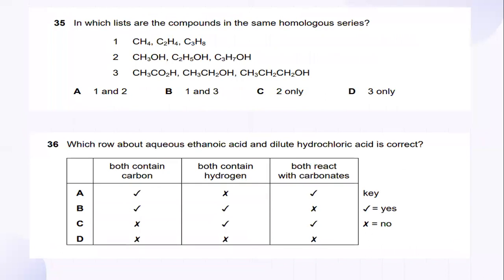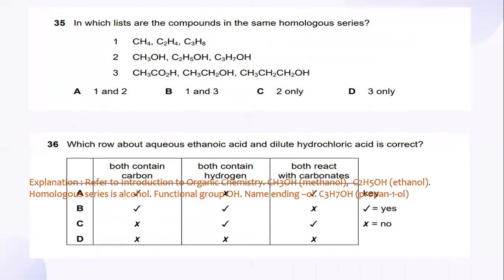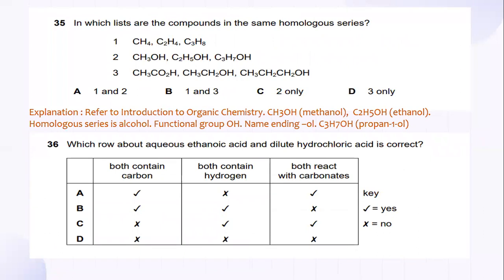And in which list are the compounds in the same homologous series? And refer to introduction to organic chemistry. CH3OH methanol, C2H5OH ethanol, and homologous series is alcohol. And functional group is OH. And name ending is OL. And C3H7OH is propan-1-ol. So, the answer is number two only.